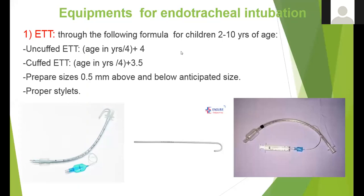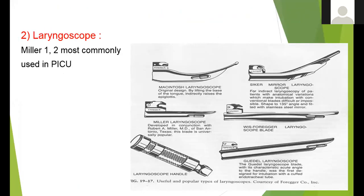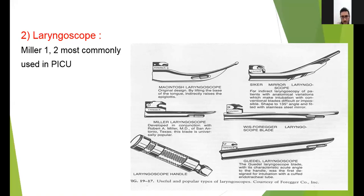The next device for intubation is the laryngoscope. There are different types — straight and curved blades. Be familiar with the handle, how to check the light and battery. The Miller laryngoscope is straight and most commonly used in pediatrics. The curved one is called McIntosh. We usually use Miller sizes 1 and 2 in pediatrics. Know how to assemble the laryngoscope, connect the handle with the blade, check the light, and fix it during intubation.